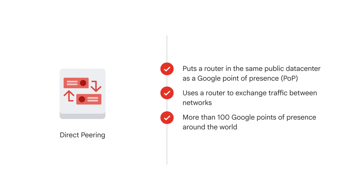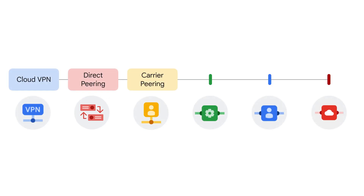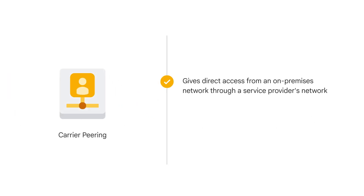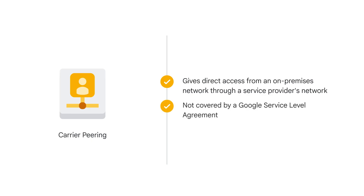Customers who aren't already in a point of presence can work with a partner in the carrier peering program to get connected. Carrier peering gives you direct access from your on-premises network through a service provider's network to Google Workspace and to Google Cloud products that can be exposed through one or more public IP addresses. One downside of peering, though, is that it isn't covered by a Google service level agreement.